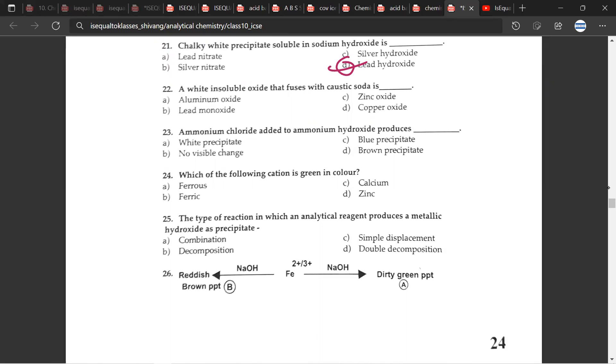The 22nd question. A white insoluble oxide that fuses with caustic soda is what? So the correct answer for this would be A, aluminum oxide. Ammonium chloride added to ammonium hydroxide produces. Ammonium chloride is NH4Cl, and ammonium hydroxide would be NH4OH. Produces what? So the correct answer would be B, no visible change. Which of the following cation is green in color? So as I said before, it is ferrous. Ferrous is Fe2+. Ferrous is Fe2+, and ferric, -ous is 2+ and -ic is 3+. The type of reaction in which analytical region produces a metallic hydroxide as precipitate. So that would be D, double decomposition.